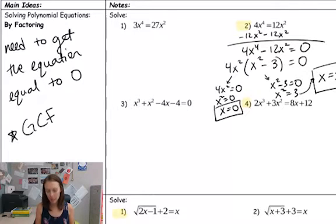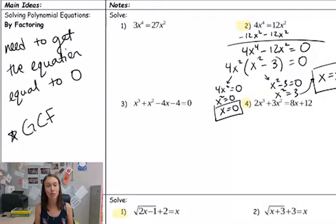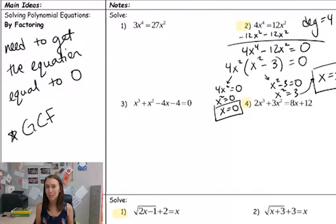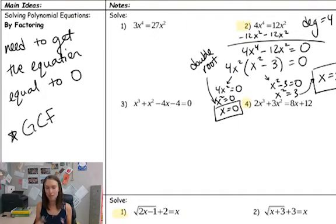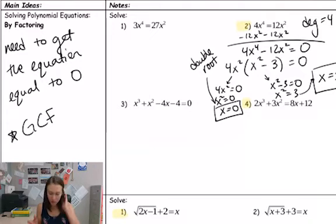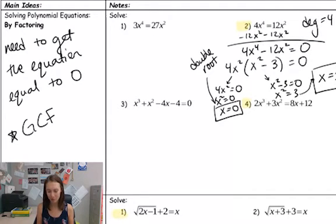It's also good to note the fundamental theorem of algebra says that the number of zeros or solutions should be the same as your degree. This one has a degree of 4 and I only have three solutions, but really it's 4 because this one ended up being a double root — x² was zero, so we had two x's multiplied together to be zero, so technically we have two answers that are both zero. So I do have my four solutions for my fourth-degree function. It's always good to double-check your number of solutions with your degree.